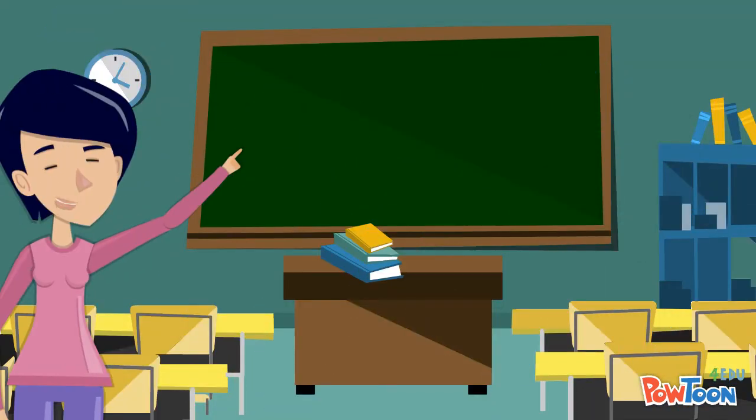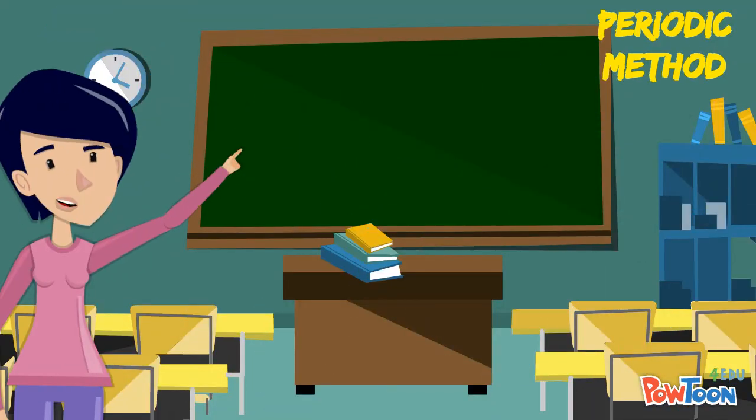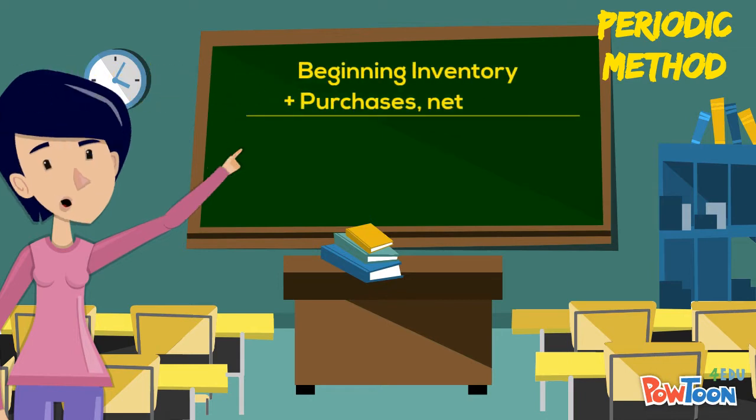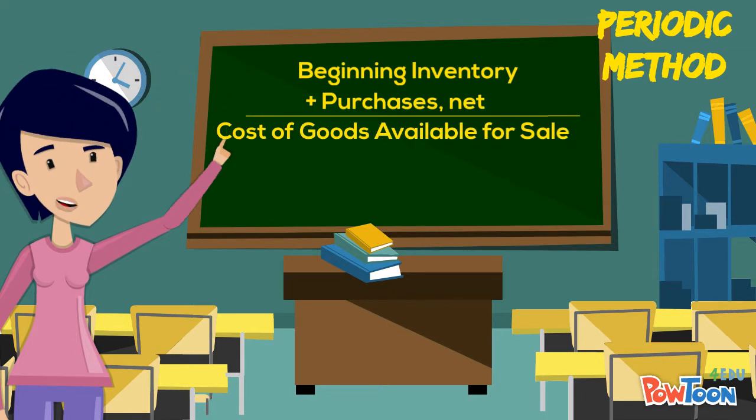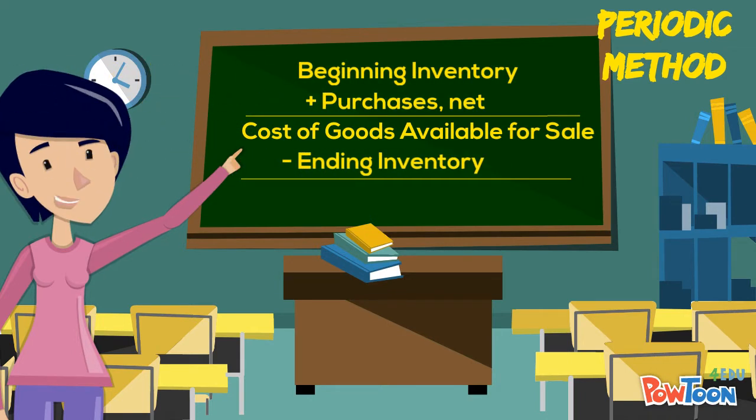Under the periodic method, cost of goods sold is calculated based on our beginning inventory plus our purchases minus ending inventory.